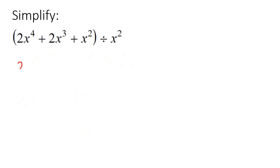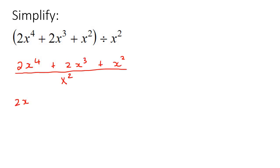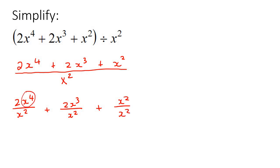Here's our next example. You're going to write it out and split it up — you can even skip straight to splitting it up immediately. Now we just cancel. If you have x to the 4 at the top and x squared at the bottom, that gives you x squared. Here you're just left with a 2. If you cancel x cubed and x squared, you're left with x, and there's a 2. And if you have x squared divided by x squared, that just becomes 1.